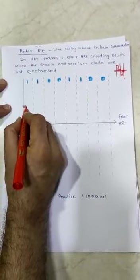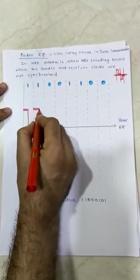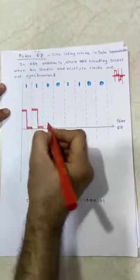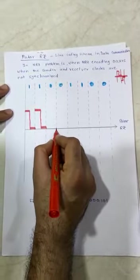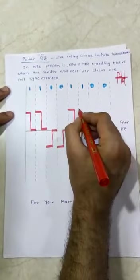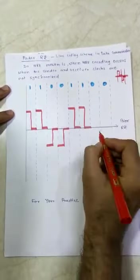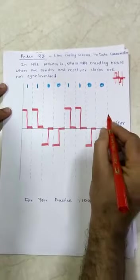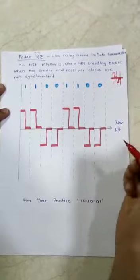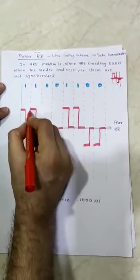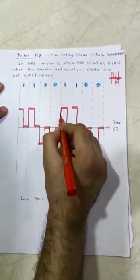We create a normal Z. Again one comes, again we create a normal Z. When zero appears, we draw an opposite direction Z below the reference line. Again one appears, we create a normal Z. Again zero appears, opposite direction Z below the reference line. Again zero appears, opposite direction Z. Now we have to connect all the lines together to create a waveform for Polar RZ.